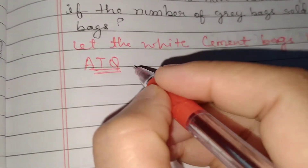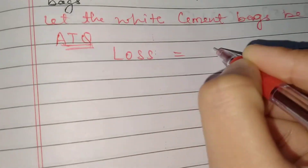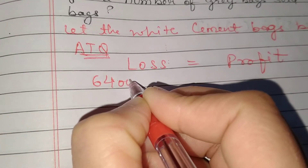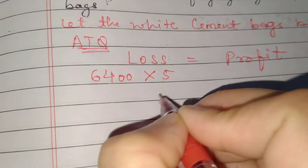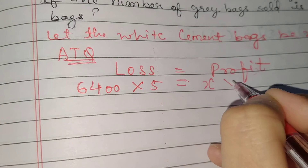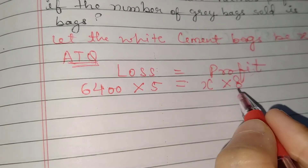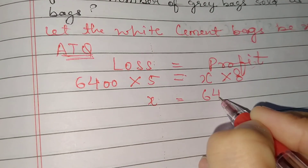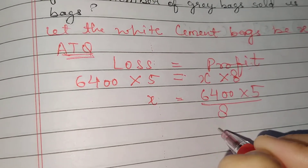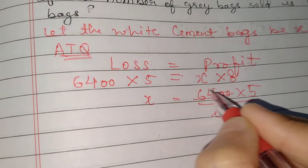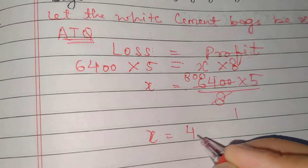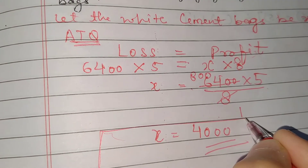According to the question, for neither profit nor loss: loss equals profit. Loss on grey cement is 6,400 multiplied by 5 = rupees 32,000. Profit on white cement is x multiplied by 8. Setting them equal: 8x = 32,000, so x = 4,000 bags of white cement.